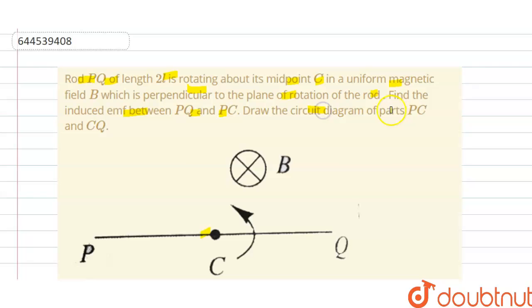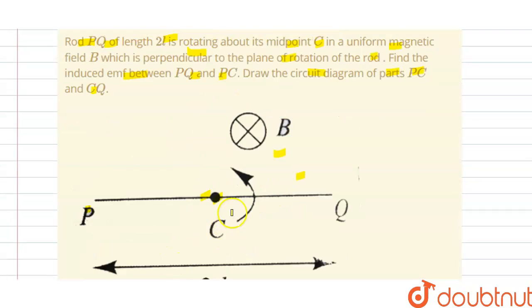So we have P and Q, C is the midpoint here, B is the magnetic field. So we have this length is 2l. We have to find the induced EMF for PQ and PC.